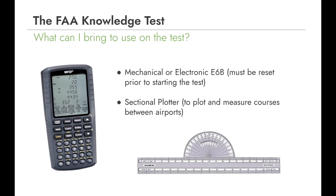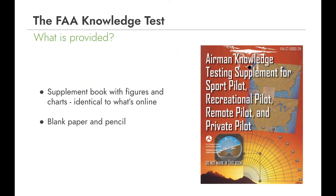You also want to bring your sectional plotter — essentially a ruler that allows you to measure courses and distances on an aviation chart. While there are fewer questions related to flight planning, it's helpful just to have to line up on charts or as a straight edge. You'll also be provided a supplement book at the testing facility with about 70 or 80 different figures and charts. You can download this from the FAA website, and you'll want to be familiar with it in advance.